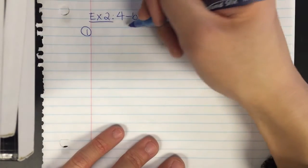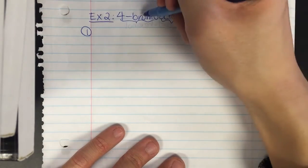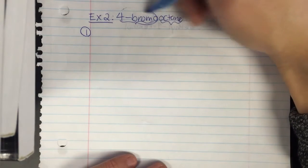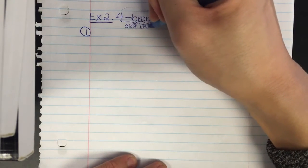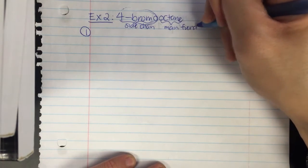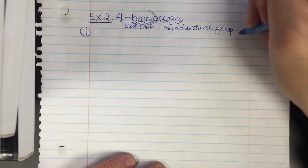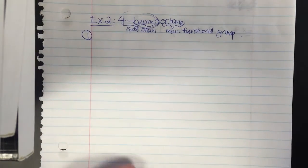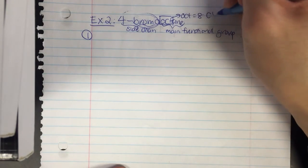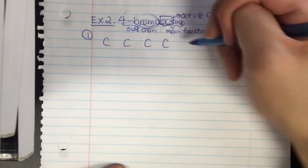In example 2, I have 4-bromooctane. The sidechain in front is bromo — one of the seven possible sidechains. So this first part is the sidechain, and after the sidechain always comes the main function group, so octane is the main functional group. In step 1, the prefix oct based on table P equals 8 carbons, so I draw and number 8 carbons: 1 through 8.